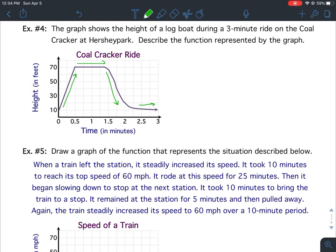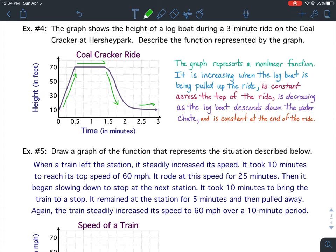So the graph represents a nonlinear function. It is increasing when the log boat is being pulled up the ride, it's constant across the top of the ride, is decreasing as the log boat descends down the water chute,